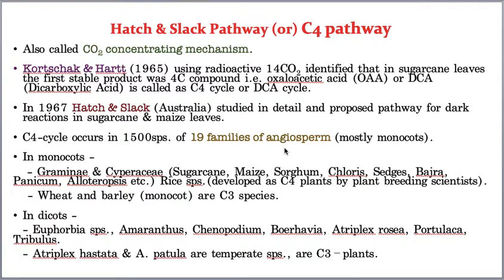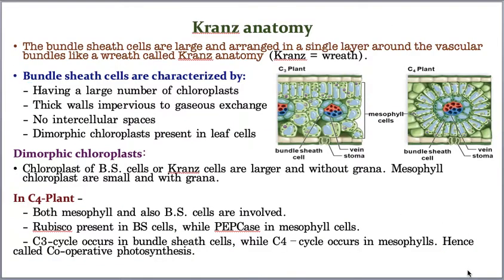Now I will explain Kranz anatomy. The internal cross section of a leaf shows upper and lower epidermis, both covered by a cuticle. In dicots, stomata are present only on the lower epidermis — called a hypostomatous leaf — whereas in monocots, stomata are on both sides, called amphistomatous.